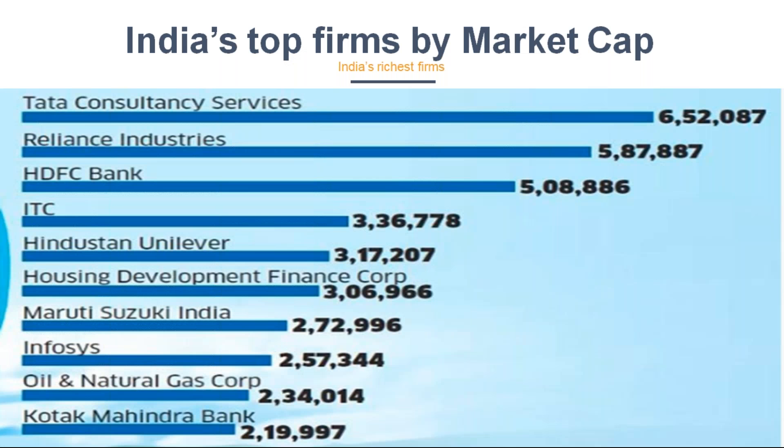These are the top Indian firms by market cap — TCS is ruling the roost, followed by Reliance. An interesting fact: the valuation of the entire Pakistan stock exchange is less than TCS. The valuation of their entire exchange — like our Bombay Stock Exchange — is less than the total valuation of our TCS, which is 6.5 lakh crores. Is it not interesting?